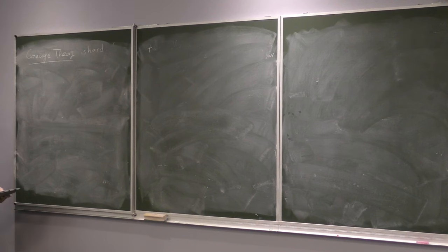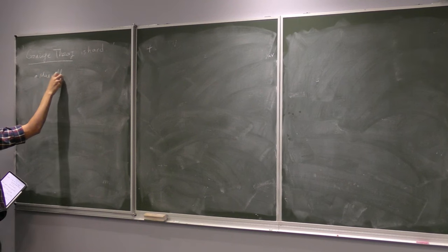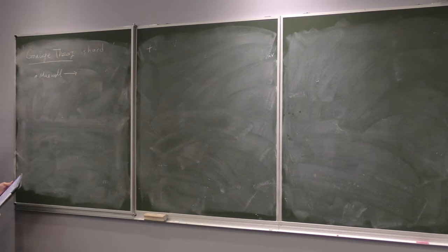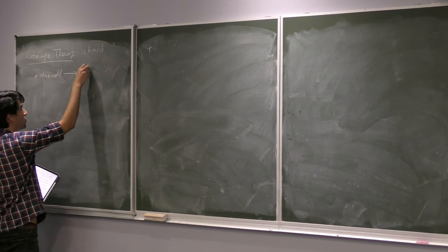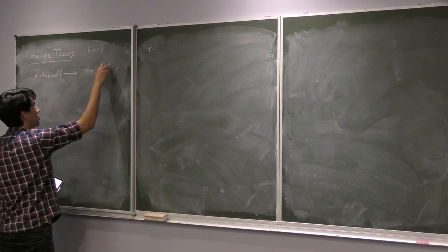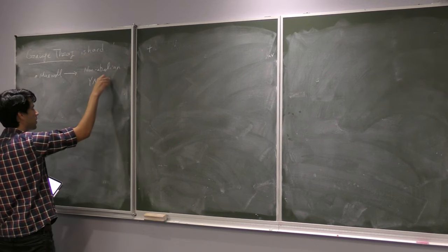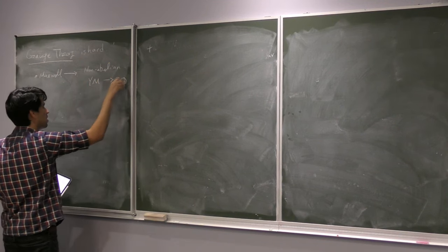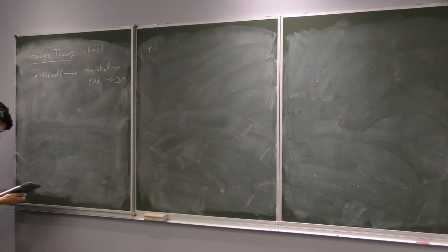As I mentioned before, we did the maximal theory, but really my goal for these lectures is to get you up to speed on how a higher form symmetry works in non-abelian gauge theories, or non-abelian Yang-Mills, and really with the hope of eventually getting to QCD. Because that's where all of the new interesting things happen. So that's my goal.